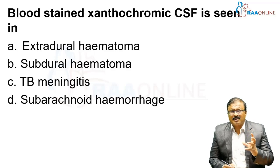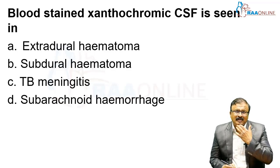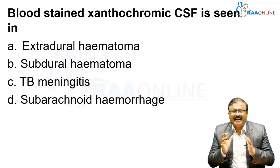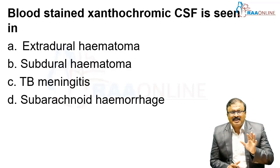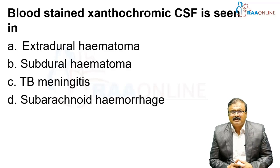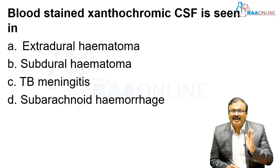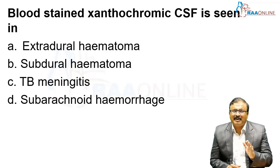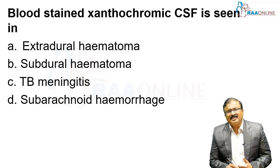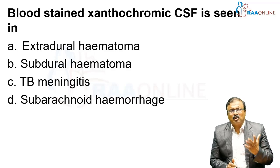Consider this subarachnoid hemorrhage scenario: a young patient aged 20 to 24 years presents with sudden onset severe headache, no comorbidities, projectile vomiting, features of raised ICP, seizures, followed by confusion or unconsciousness. The diagnosis is very clear — most commonly subarachnoid hemorrhage, usually due to an AV malformation that has burst. In elderly patients, hypertensive bleeds are more common; in young patients, AV malformation is typical.